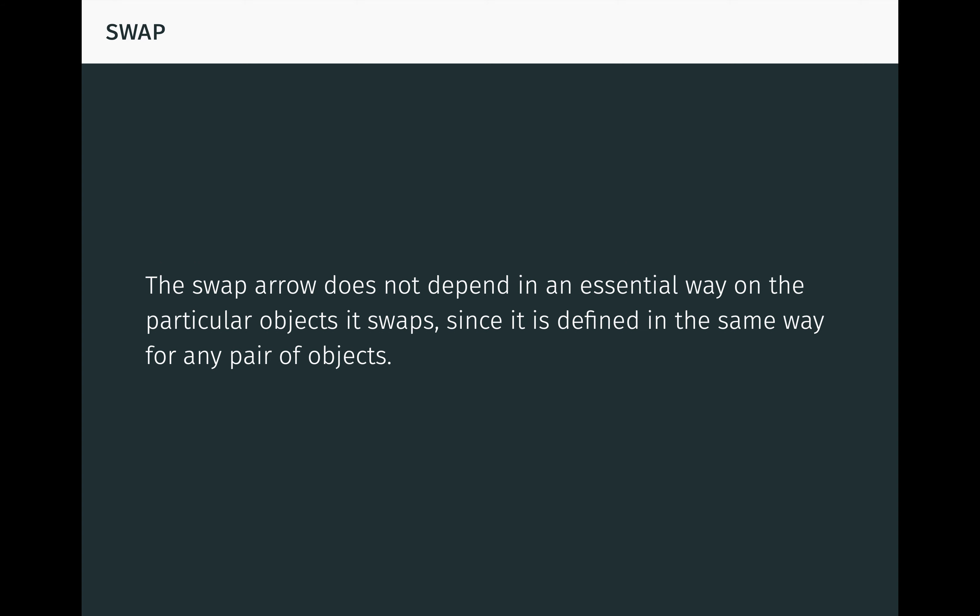Now, intuitively, the swap arrow does not depend in an essential way on the particular objects it swaps, since it is defined in the same way for any pair of objects. We can make this intuition precise using the tools of category theory in the following way.